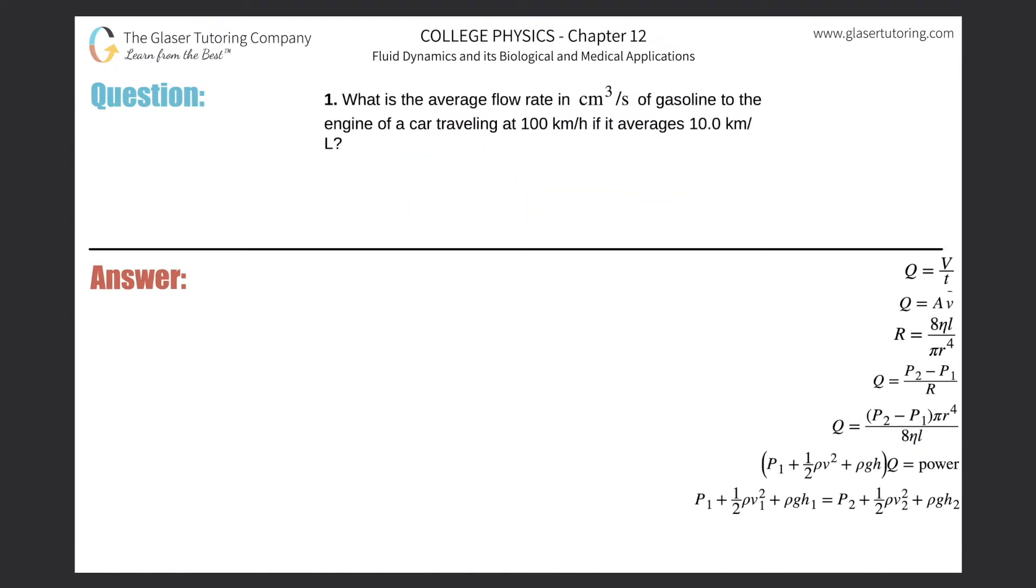Number one: What is the average flow rate in cubic centimeters per second of gasoline to the engine of a car traveling at 100 kilometers per hour if it averages 10 kilometers per liter? All right, so...